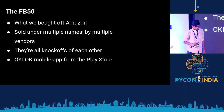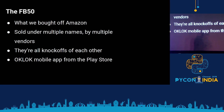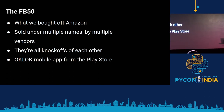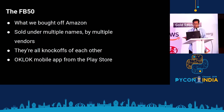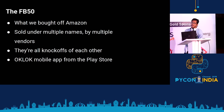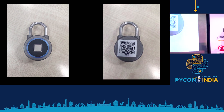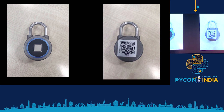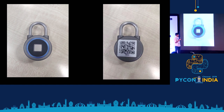Our specific lock is called the FB50. We bought it off Amazon for around 3,000 rupees. Similar locks were sold by multiple vendors — basically the same lock with different names. The mobile companion app that came with the lock was called OKLock. The front of the lock has a fingerprint sensor, and the back comes with a QR code that you can use to pair with it.